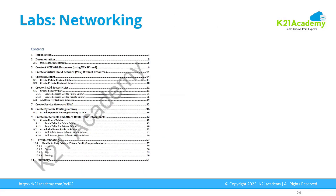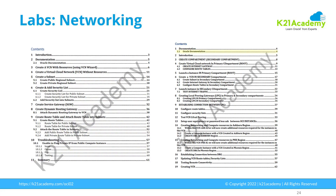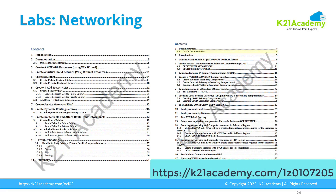For hands-on labs you should be doing things like creating VCN, subnet, security list, service gateway, dynamic routing gateway, route tables and all related configurations — and similarly for advanced topics. If you want a full list of all the hands-on labs you must perform to clear this certification or as covered in our training program, have a look at k21academy.com/1z0-1072-05.